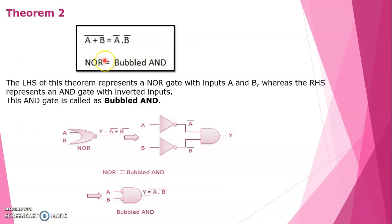De Morgan's second theorem states that the complement of a sum equals the product of complements: A plus B bar equals A bar into B bar. The first is NOR and the second is bubble AND. The left-hand side represents a NOR gate with inputs A and B, whereas the right-hand side represents an AND gate with inverted inputs, called the bubble AND. This is the circuit diagram for De Morgan's second theorem.